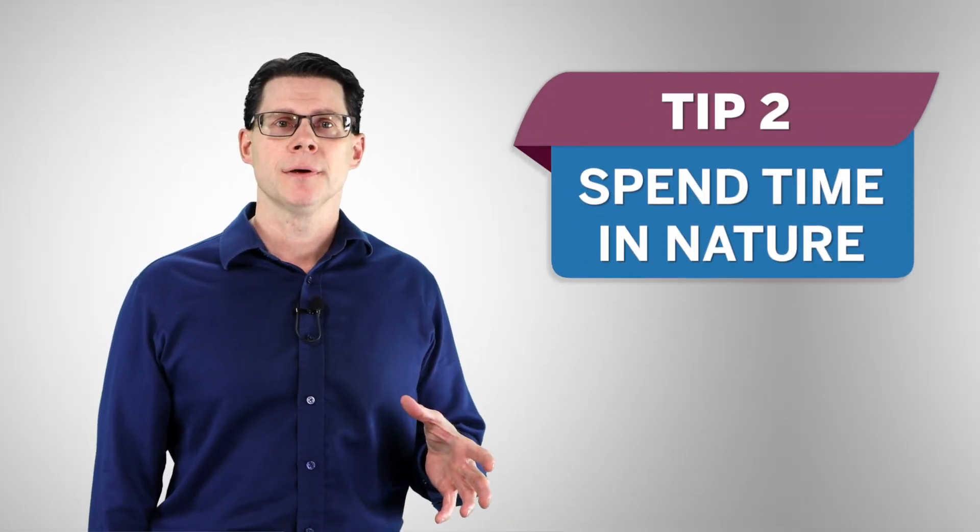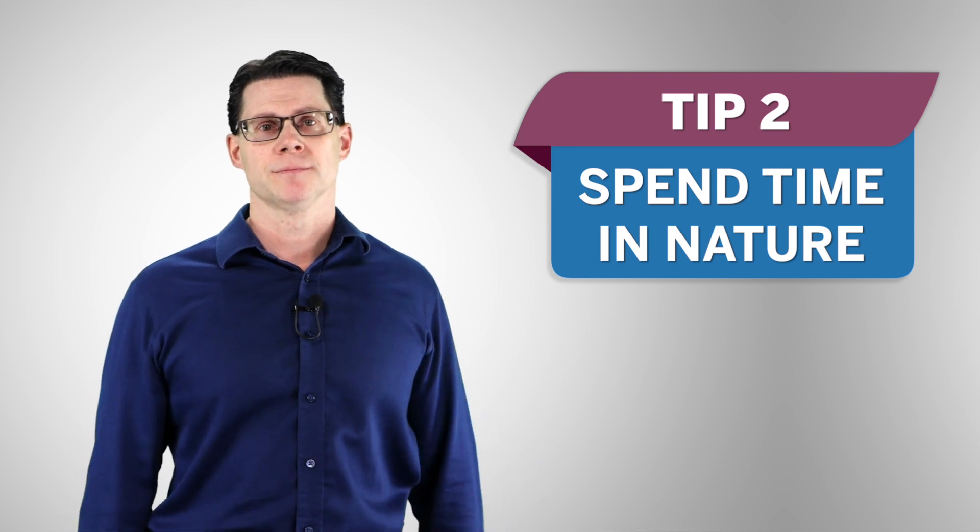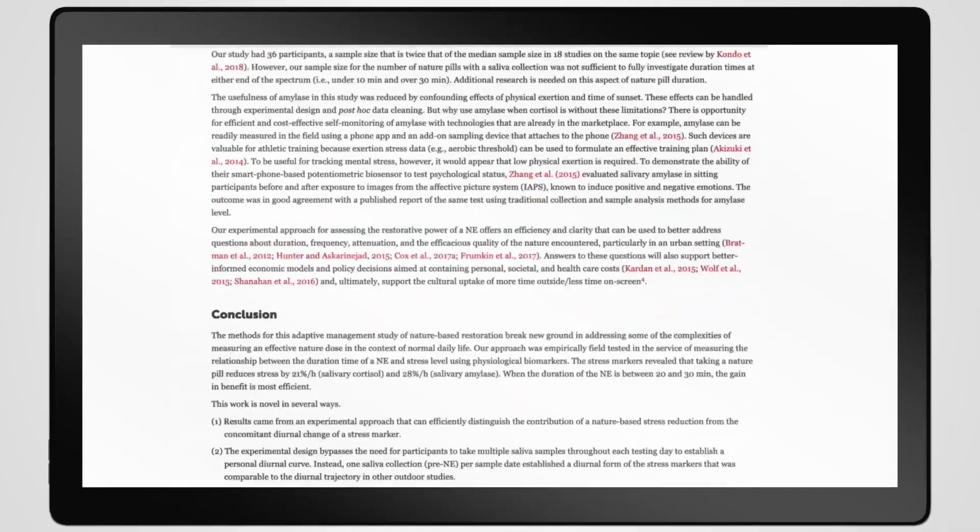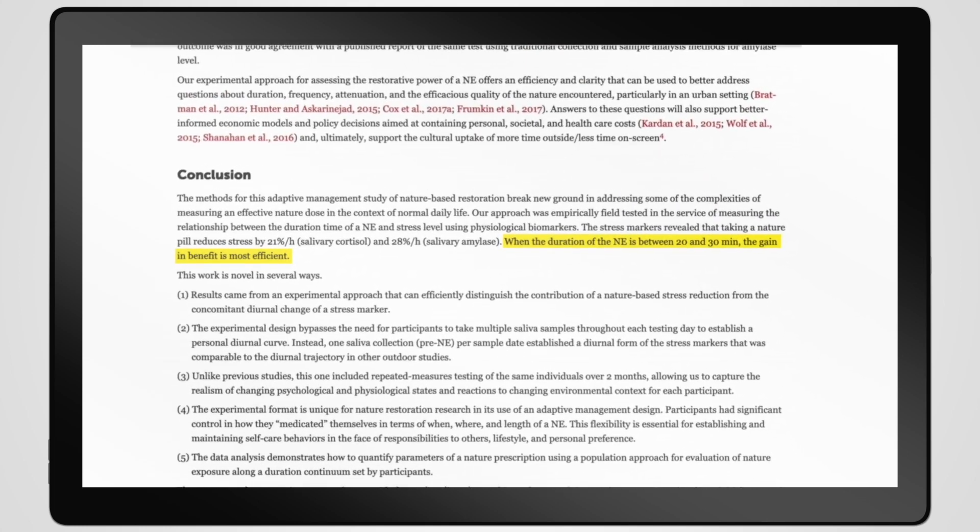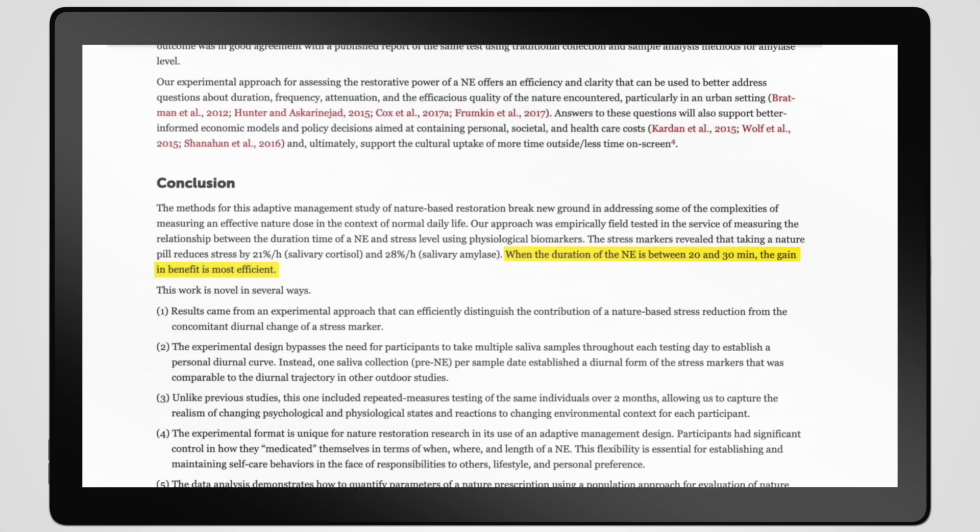For my next tip, I encourage you to spend time in nature. A 2019 study by Dr. Mary Hunter and colleagues found that spending as little as 20 minutes in nature is enough to lower cortisol levels, which is the main stress hormone in our bodies. And the great thing about Thunder Bay in Northwestern Ontario is that nature is all around us. So even though we may not be able to go to parks at this time, it's still easy to be in nature just by simply going outside.